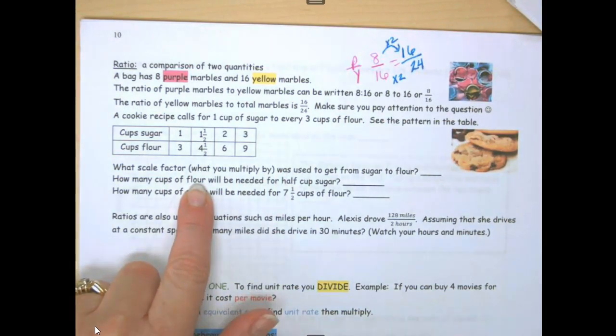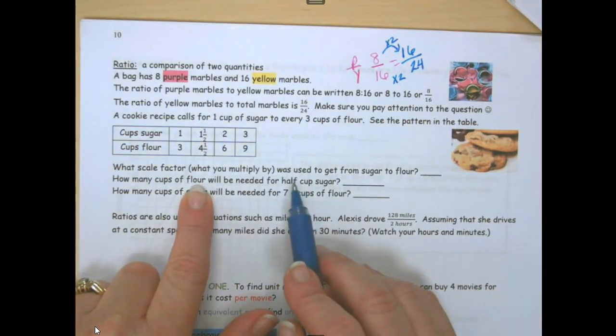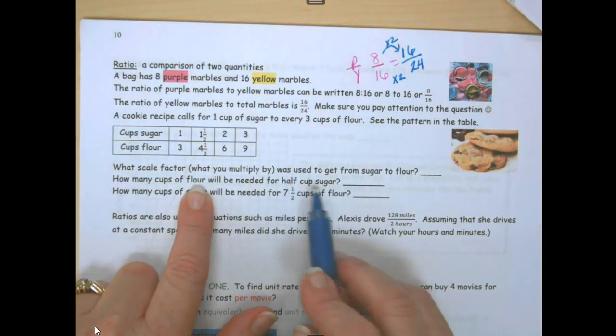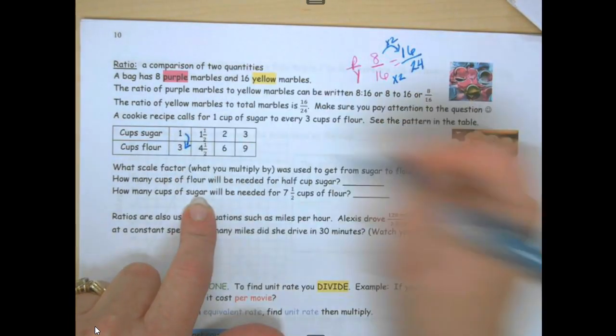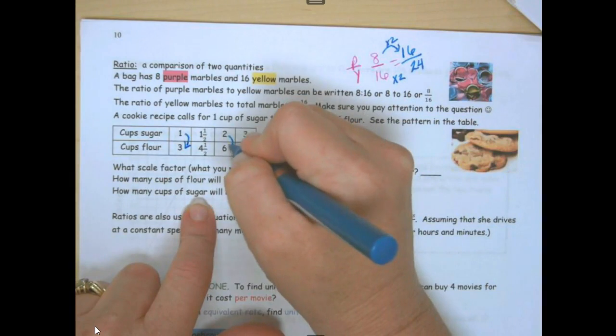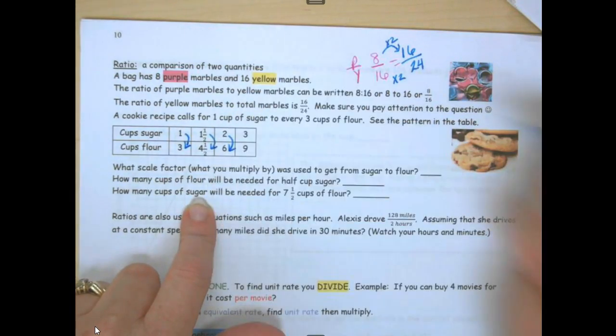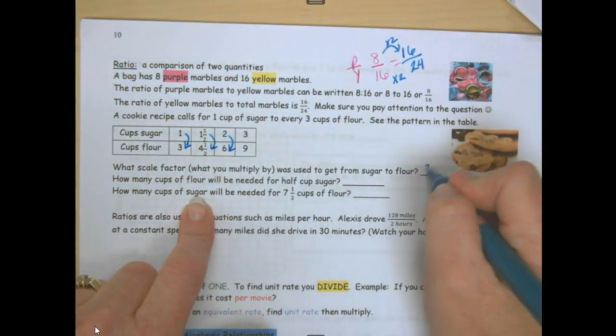Meaning, what are you multiplying by? What's used to get from sugar to flour? How do we go from sugar to flour? You are multiplying by 3.